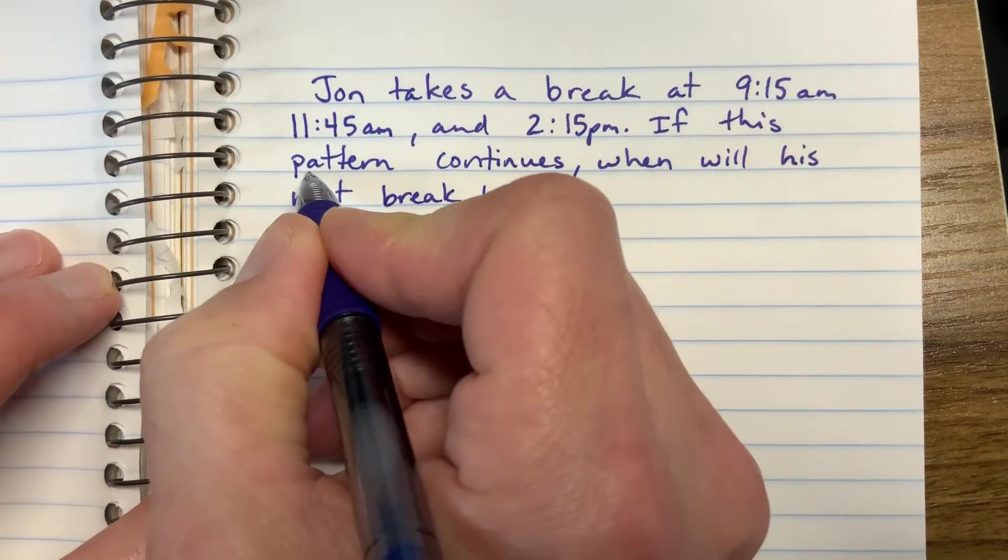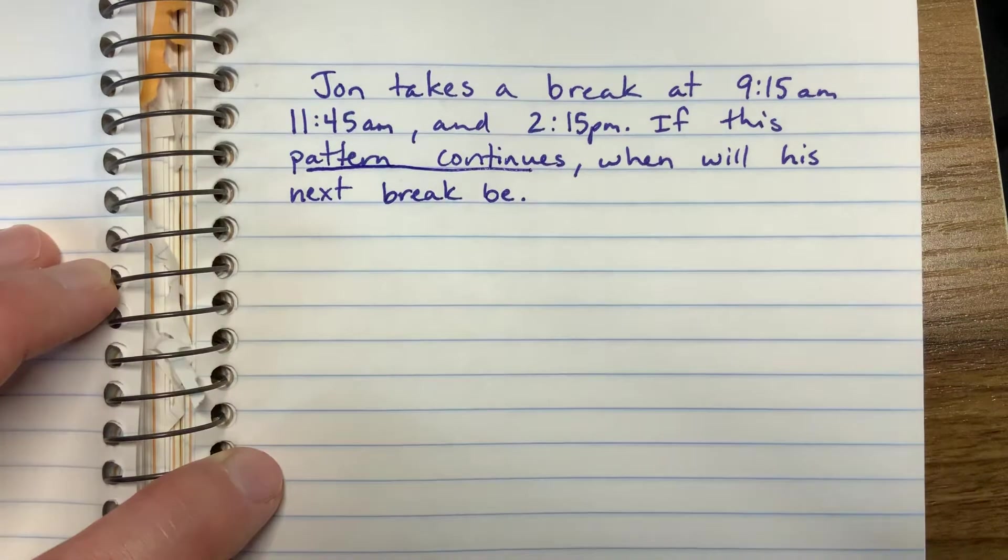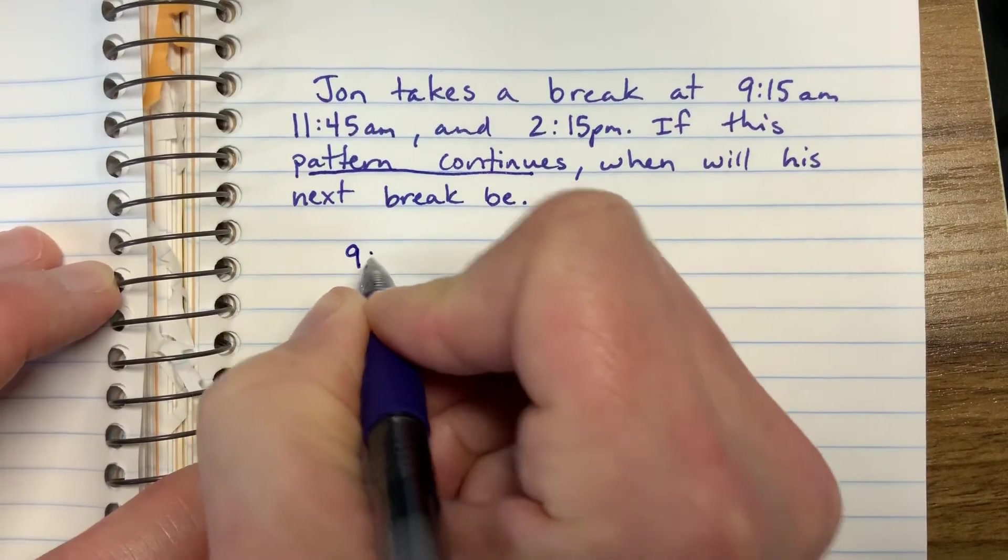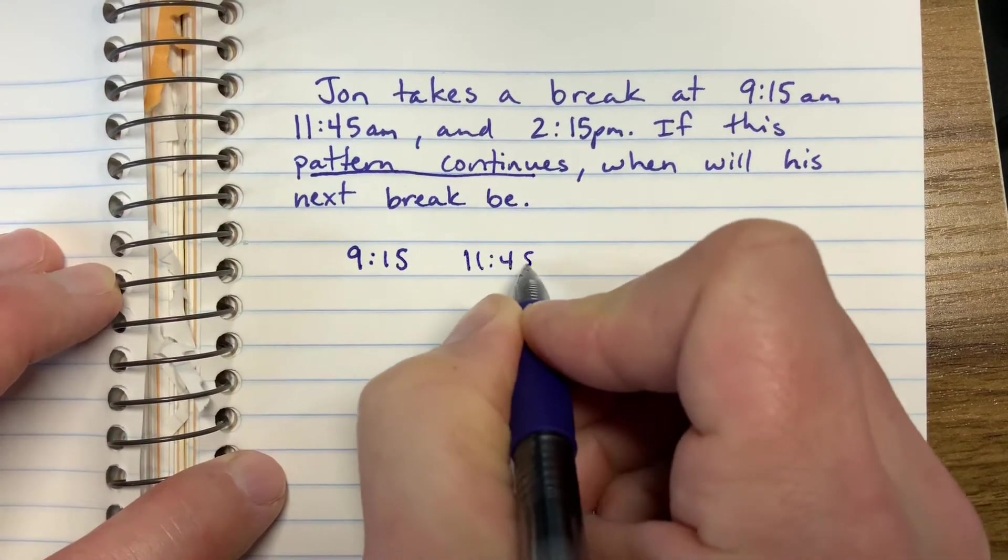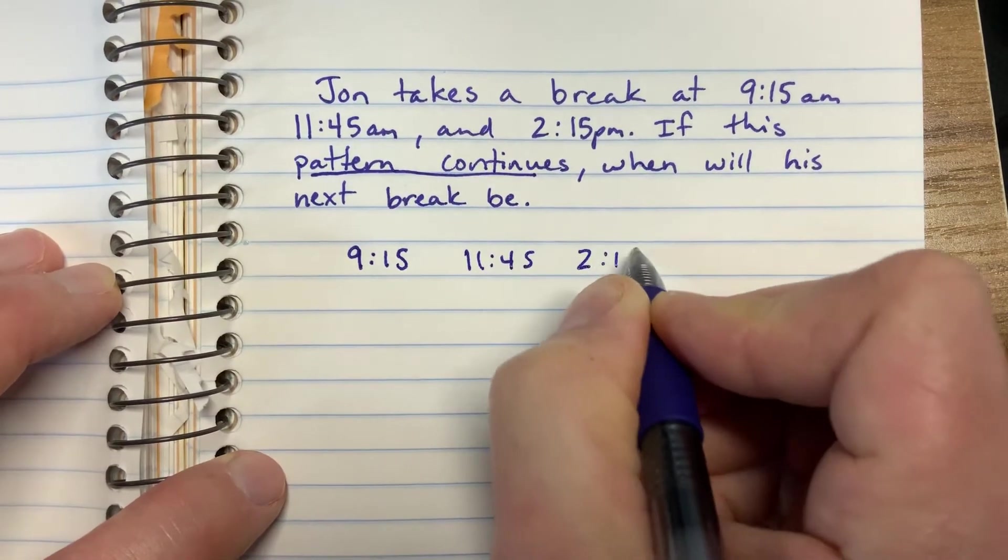So we know there's a pattern because it says if this pattern continues. So we need to find the pattern between 9:15, 11:45, and 2:15.